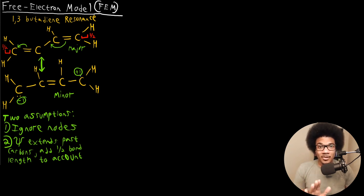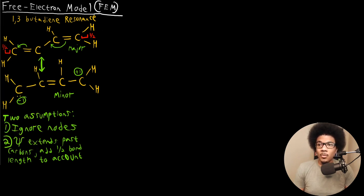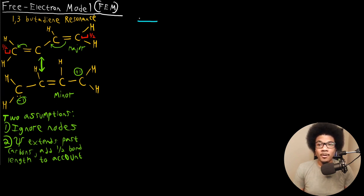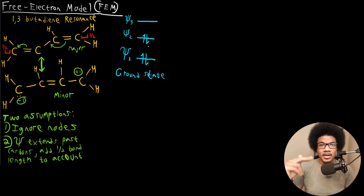Using these two assumptions, we can start to actually calculate this excited state using the one-dimensional particle-in-the-box model. We know that we have two double bonds in butadiene, so that means we're going to have four pi electrons — two pi bonds will be equivalent to four pi electrons. I'm going to draw three orbitals for these electrons. We'll have a doubly occupied orbital psi 1, doubly occupied psi 2, and leave psi 3 empty. This is our ground state, with all four electrons doubly occupying the lowest two orbitals.